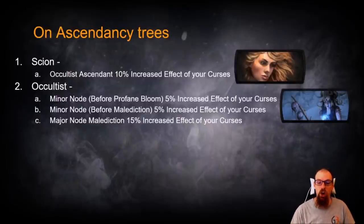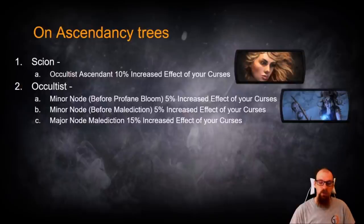Then when you look at the Occultist, you've got some minor nodes right before Profane Bloom that give you 5% increased effect of your curses, another minor node before Malediction, which gives you 5% increased effect of your curses, and a major node, Malediction itself, which gives you 15% increased effect of your curses.